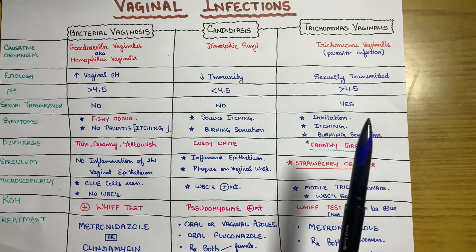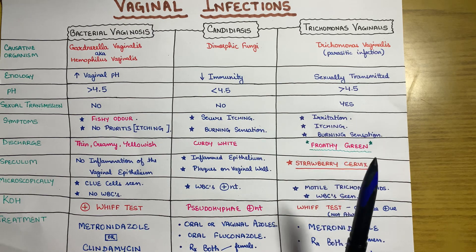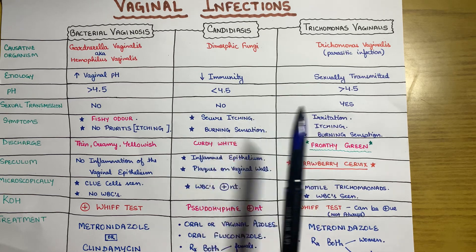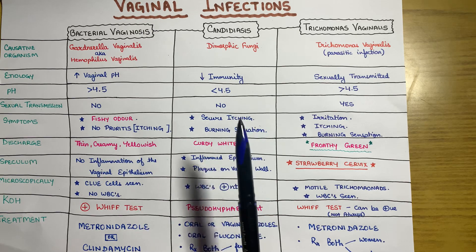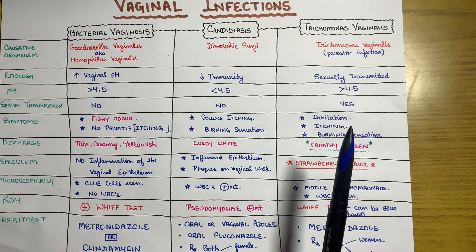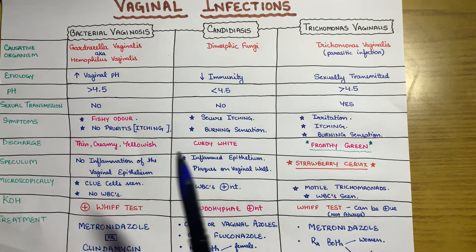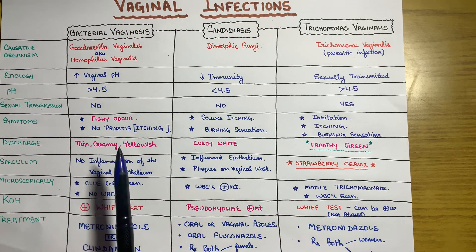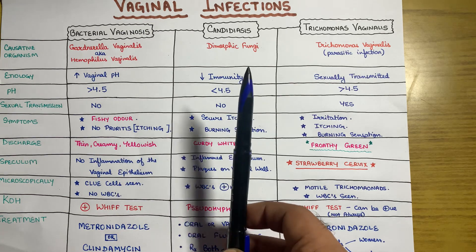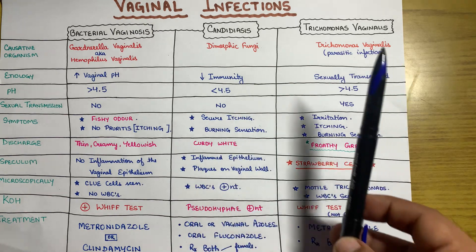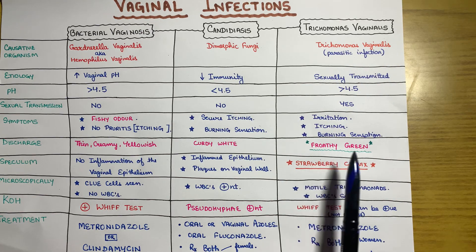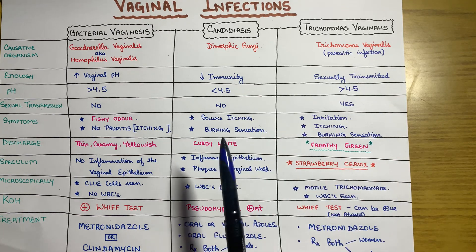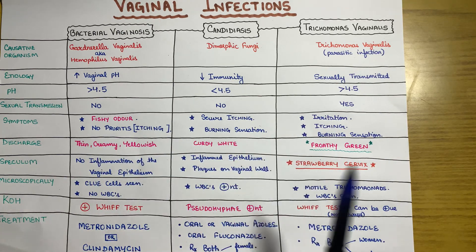Symptoms include irritation, itching, and burning sensation, though itching is more severe in candidiasis than in trichomonas vaginalis. Comparing discharges: bacterial vaginosis has thin creamy yellowish discharge, candidiasis has curdy white discharge, while trichomonas vaginalis produces frothy green discharge — a very important distinguishing point frequently tested in medical exams.